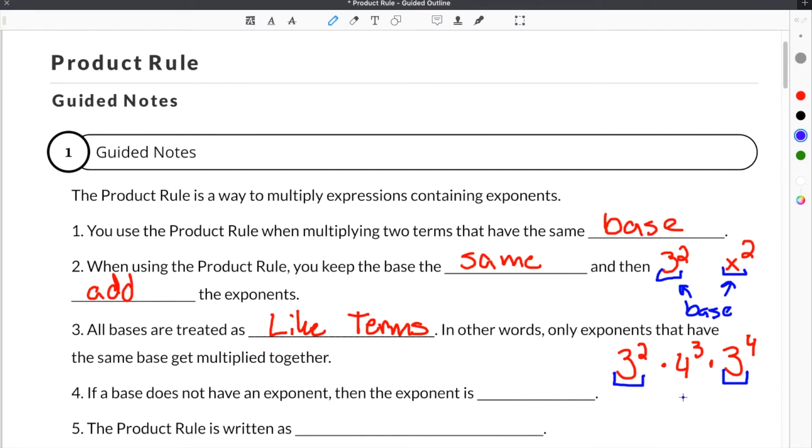Only those two could actually get multiplied together. You could not include the 4 because the base is different. If a base does not have an exponent, then the exponent is 1.